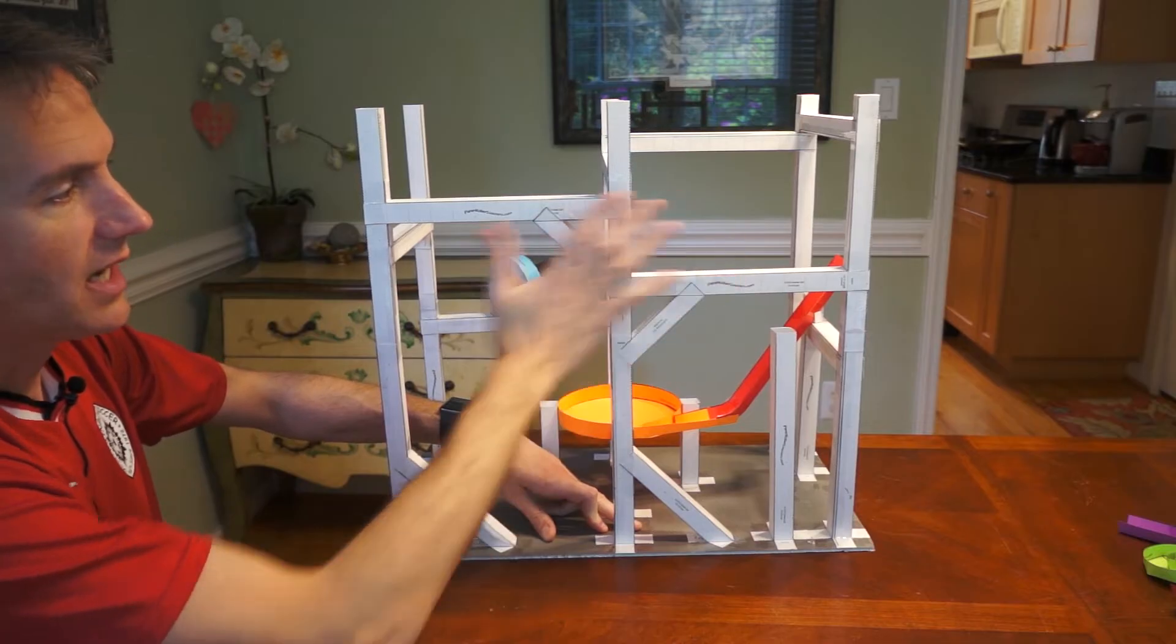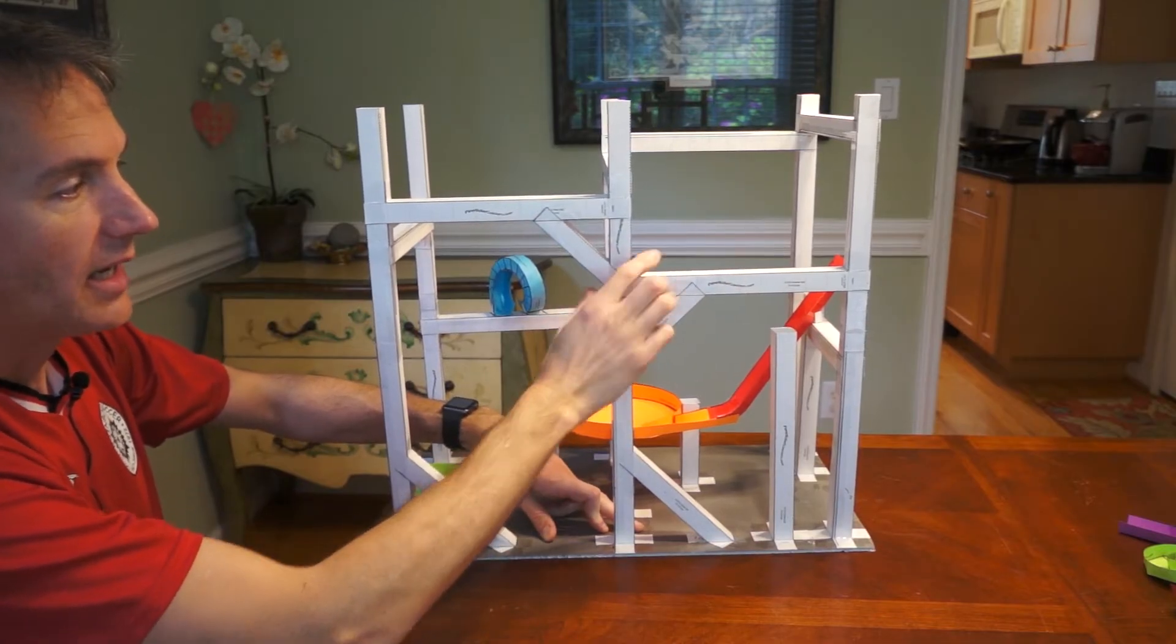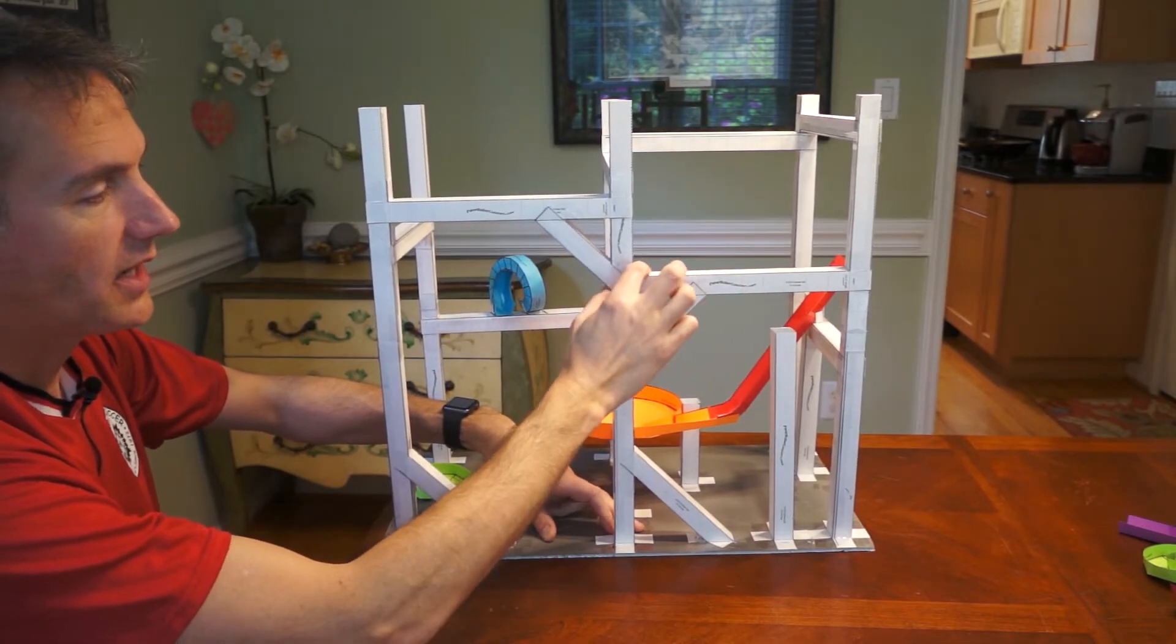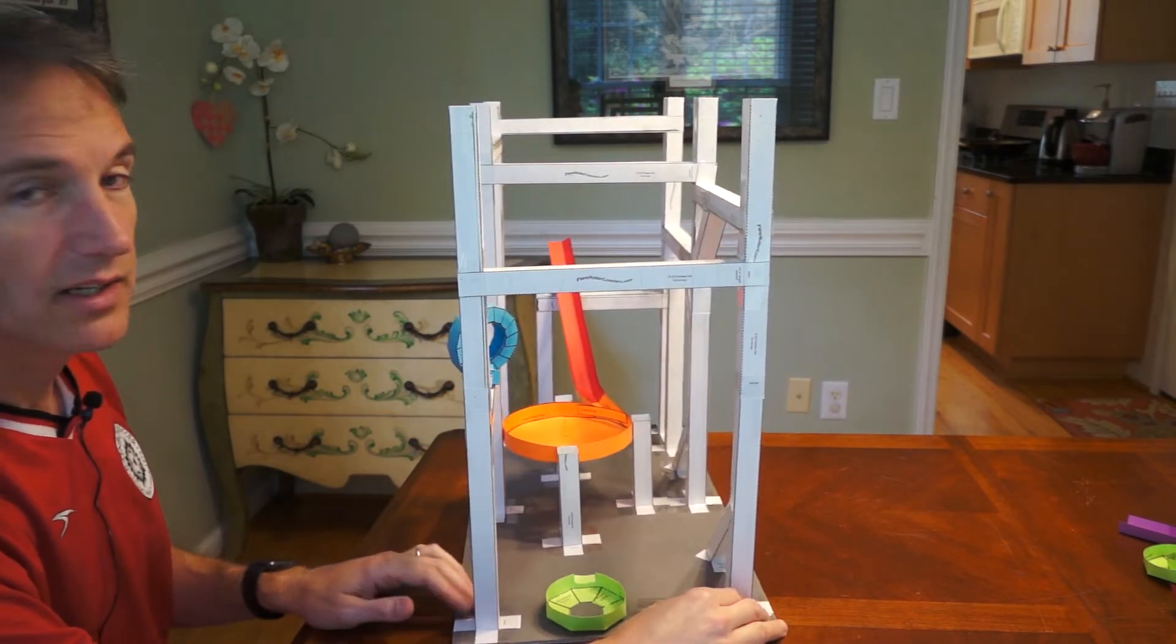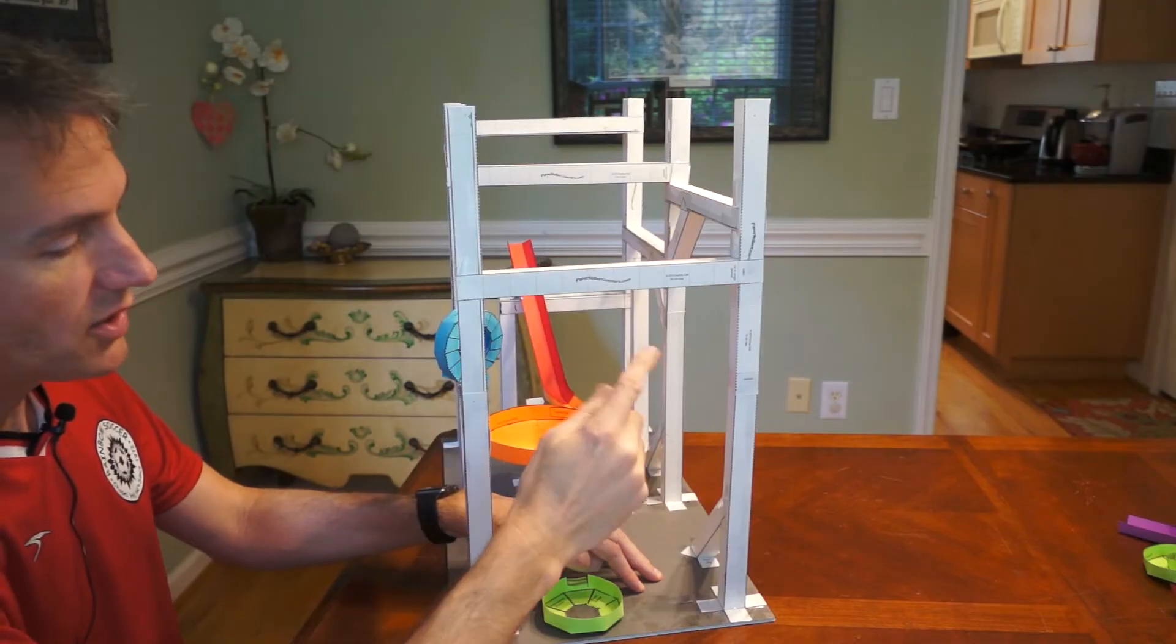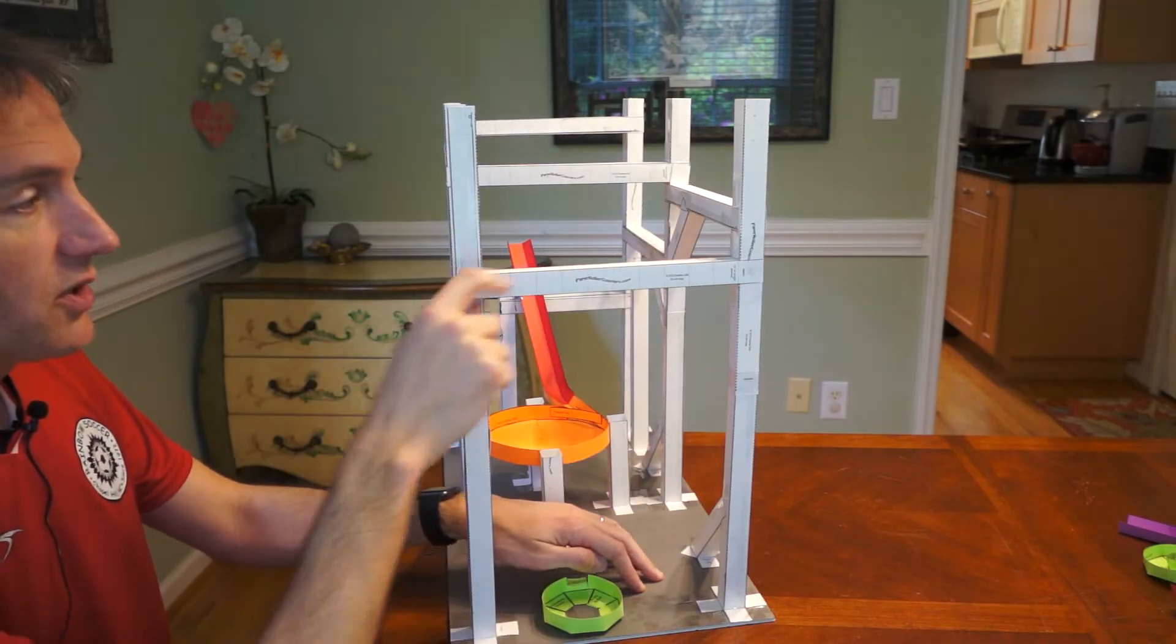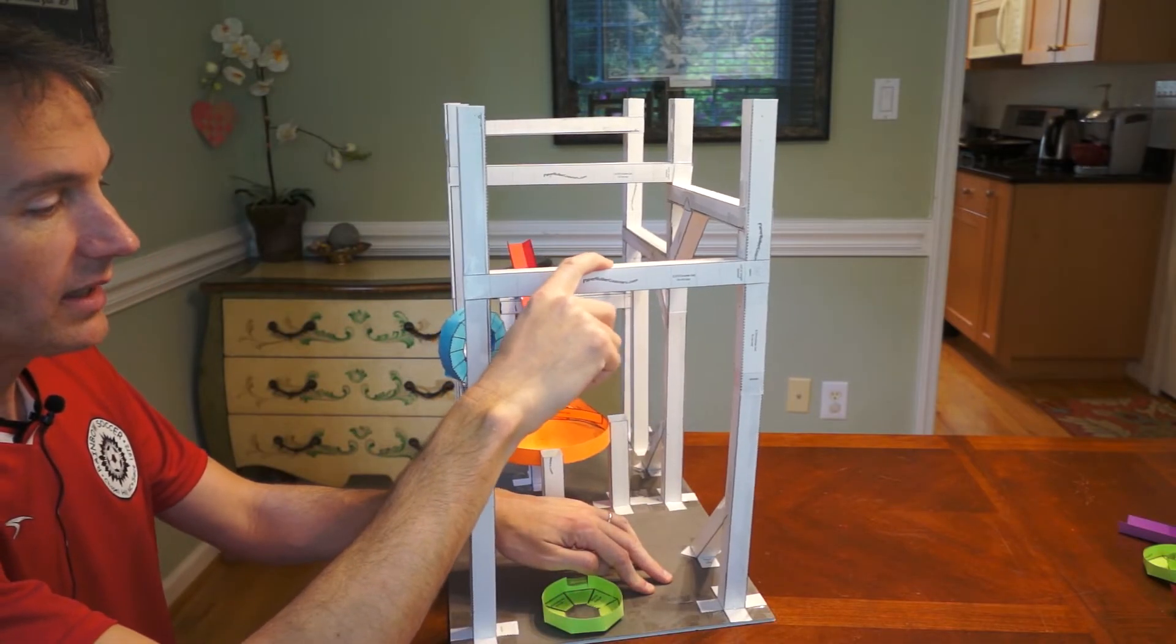It makes this side very strong in this direction, so that it can't bend very easily. But if you look from this end, you see on this side there's no diagonal supports, so it makes this wall quite weak left to right.